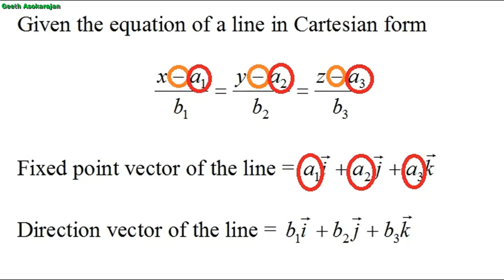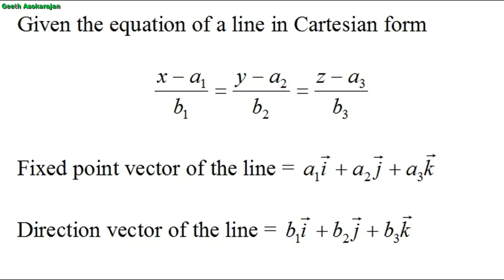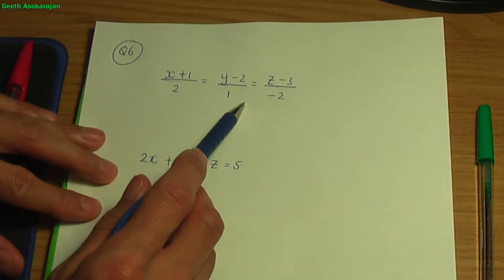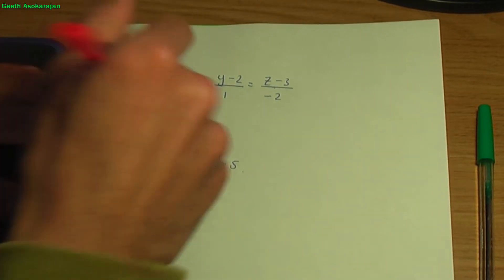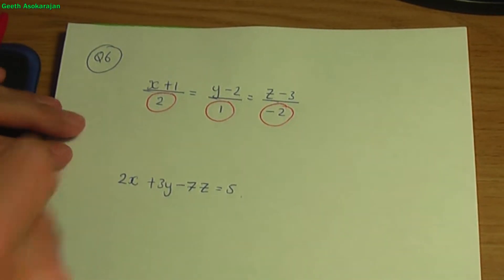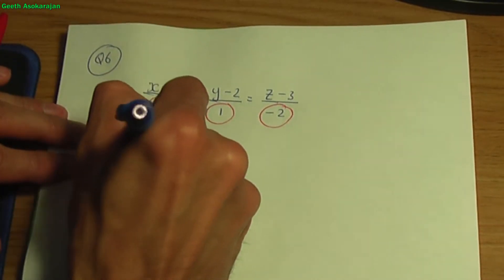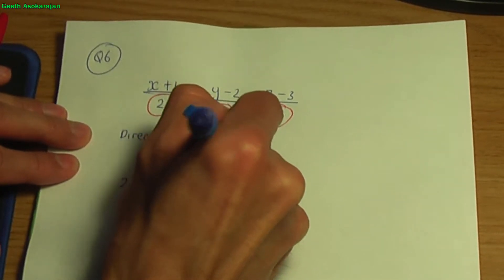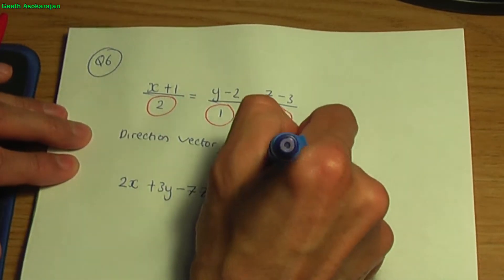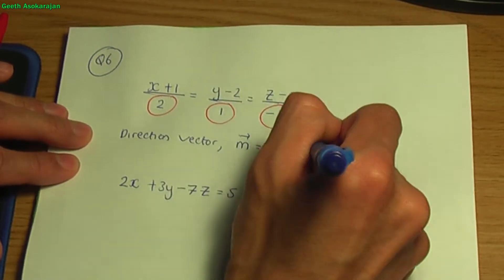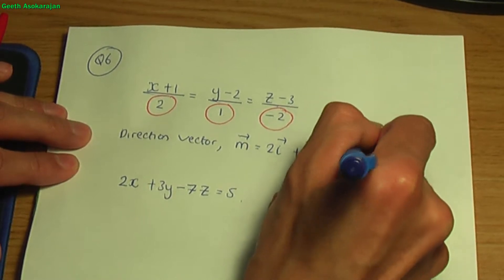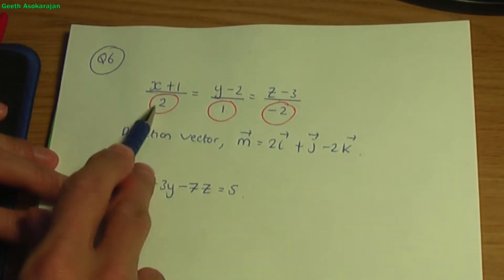It's very important to recognise that result. Going back to the paper and pen, using that knowledge, the terms in the denominator give the components of the direction vector. So the direction vector m = 2i + 1j + (-2)k. That is simply the direction vector for this line.